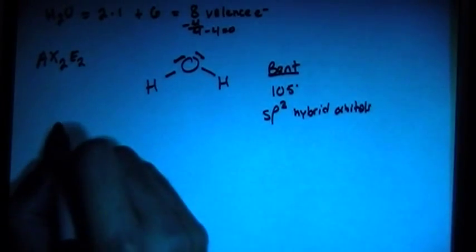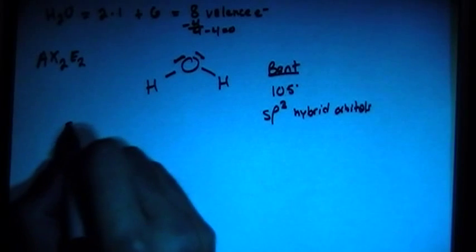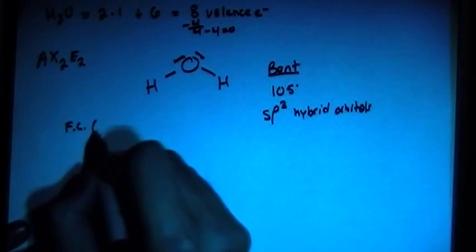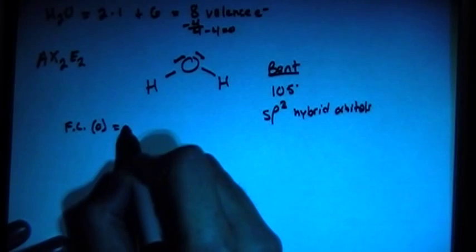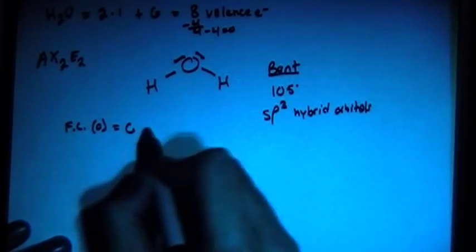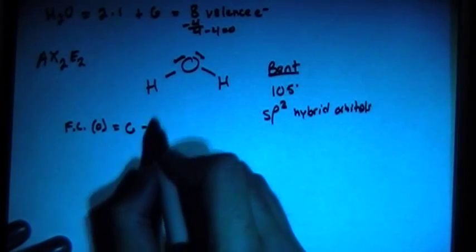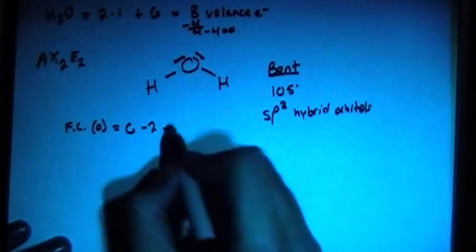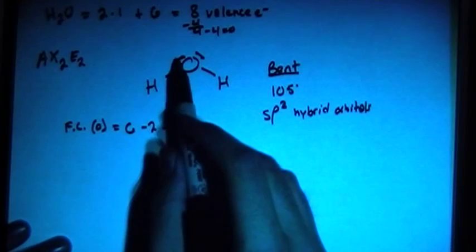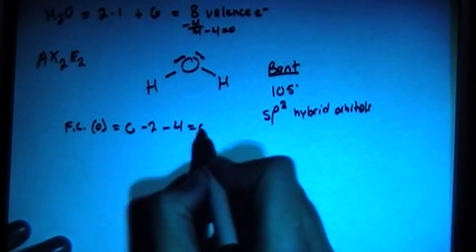And just let's go ahead and check the formal charges here. So formal charge for the oxygen. Remember, formal charge is the number of valence electrons, which is 6, minus the number of bonding pairs, there's 1, 2, so minus 2, and then minus the number of unpaired electrons, 1, 2, 3, 4. So minus 4, and that gives us 0.